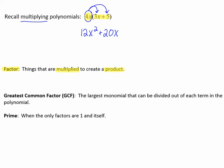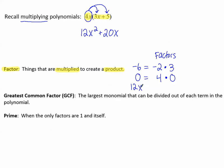Numbers have factors, like negative 6. The factors can be negative 2 times 3 — these are the factors of negative 6. Zero can be written as a product of factors, such as 4 times 0. And 12x squared can be written as a product of factors: 2 times 2 times 3, and x squared as x times x. Factors are anything that you multiply to make a product.